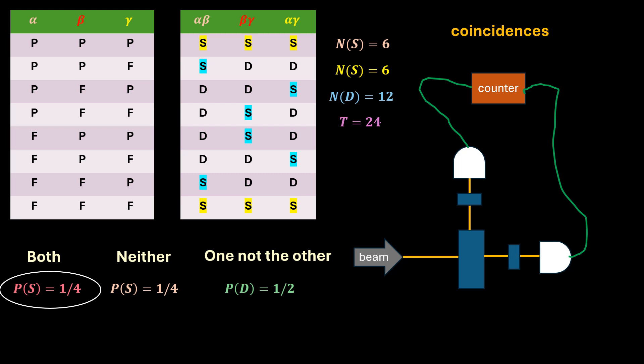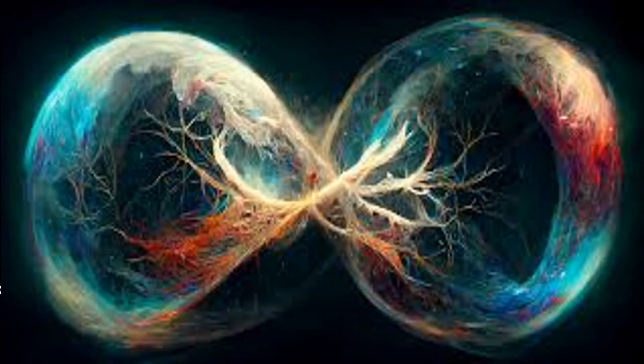This means if you run the experiment a hundred times, you should have coincidences at least 25 times. There is no violation of Bell's inequality. So, there truly are local hidden variables and quantum entanglement is a false concept.